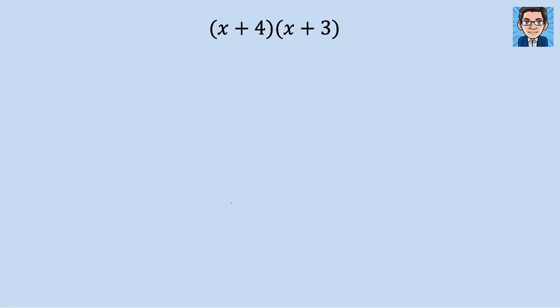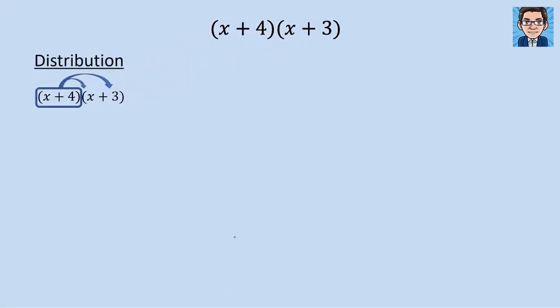So let's take a look at how to solve this with each method. First by the distribution method. We're multiplying everything in parentheses — the x plus 4 times the x, and the x plus 4 times the 3. So we end up with x times the x plus 4, and also 3 times the x plus 4.